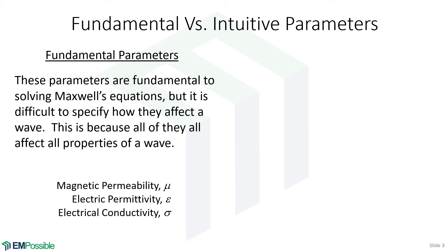They really don't have anything to do with the wave — they're describing the medium. And they're not very intuitive. If you give me numbers for all of those, I can't really tell you what effect that's going to have on the wave, the speed of the wave, how quickly the wave will decay. I really can't tell that from mu, epsilon, and sigma. But those are the fundamental parameters.